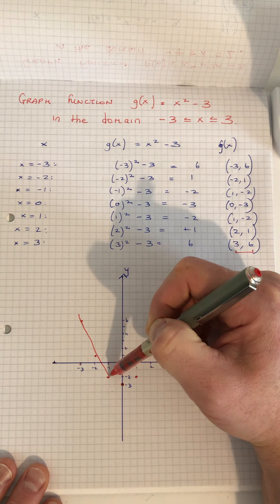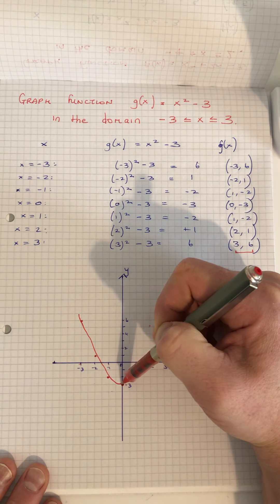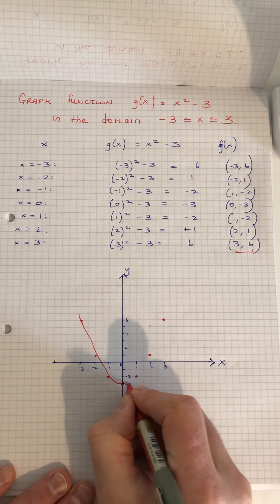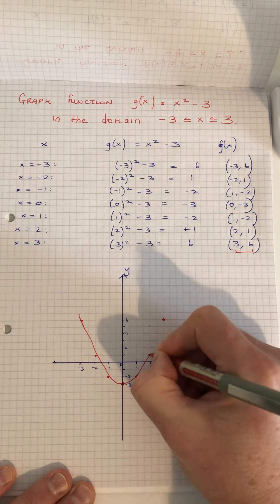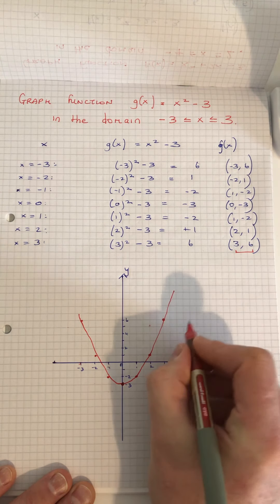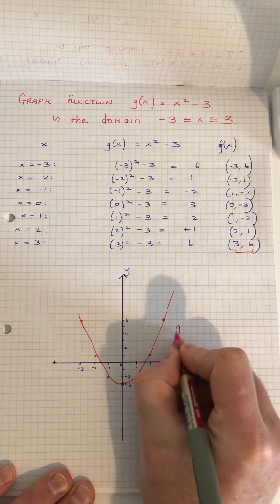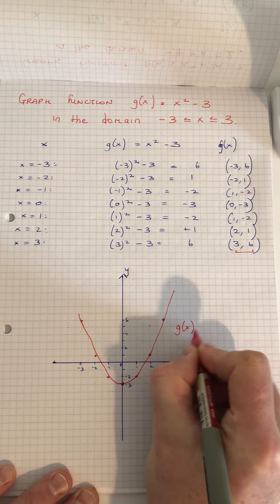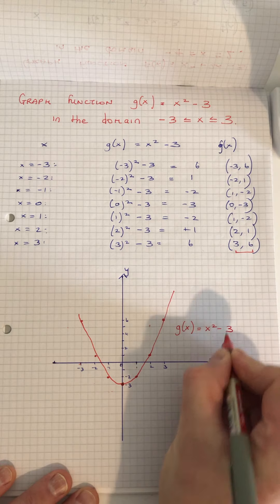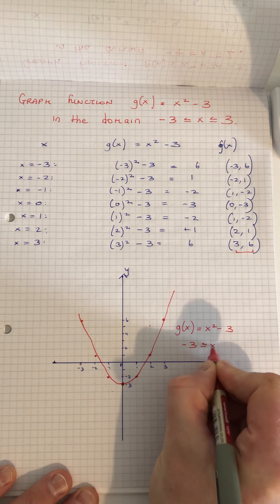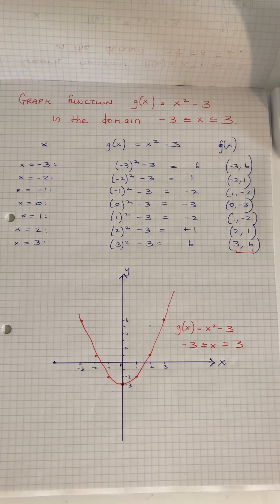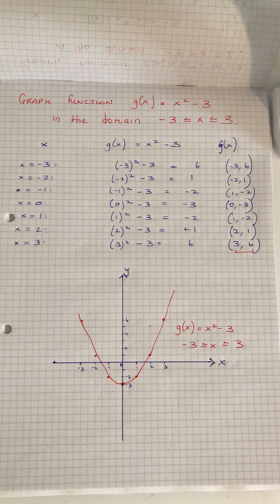We don't forget to join the points with a smooth curve like so. And that's the graph of g(x) = x² - 3 between minus 3 and plus 3. That's the second graph for you.